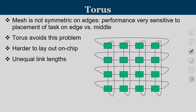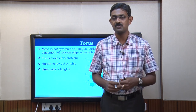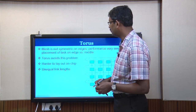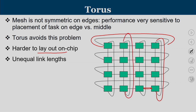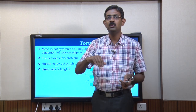Torus topology addresses the asymmetry of mesh edges, where boundary routers have fewer than four neighbors. In torus, every router has four neighbors — edge routers wrap around and connect to the opposite edge. However, layout is trickier: some links are very long, connecting one end of the chip to the other, so short links take one cycle while long links may take 3–4 clock cycles.